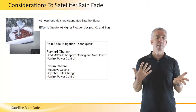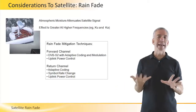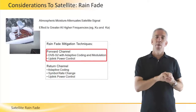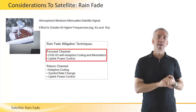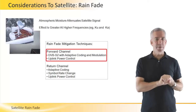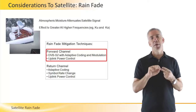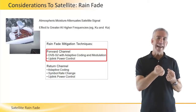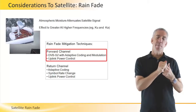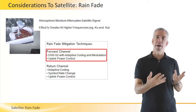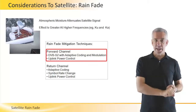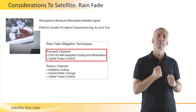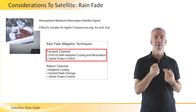There are many things that we can do to mitigate the effect of rain fade. On the forward channel, we use DVB-S2 with adaptive coding and modulation, which means we can dynamically change the coding — the forward error correction — as well as the modulation scheme, in order to get better gain out of that signal.